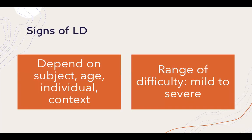The signs of having a learning disorder depend on the individual — they vary for different children, different subjects, different ages, and different contexts. The range of difficulty is mild to severe. Some of the signs are not uncommon for children who are struggling just a little bit, while others are more prominent and concerning for children who are struggling quite a bit.